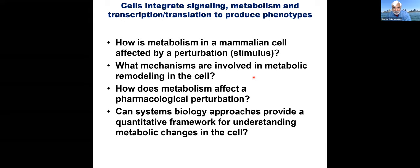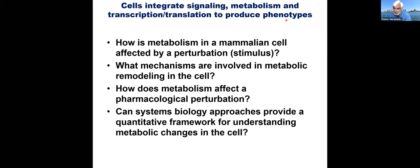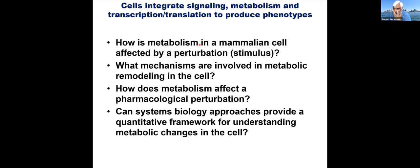So what's the question? Cells integrate metabolism, signaling, transcription, and translation to produce phenotypes. Imagine you treat a liver cell or a parasite with a drug. It metabolizes the drug, the drug binds to a receptor, activates pathways, signaling sends transcription factors into the nucleus, which activates transcription, producing transcripts that get translated into proteins and produce phenotypes. How do we really understand this from a lipid world perspective?